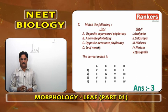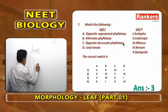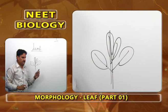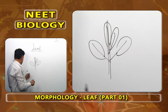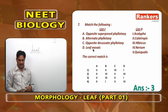Opposite decussate phyllotaxy means opposite leaves are arranged at right angles to each other. Suppose one pair of opposite leaves is here; the next pair is at right angles to the first, and so on. The example for opposite decussate phyllotaxy is Calotropis.